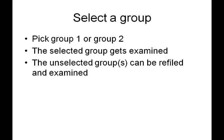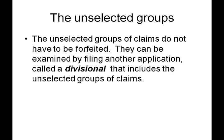However, we don't need to forfeit or abandon those unselected claims. They can be examined by filing another application called a divisional application, that includes the unselected groups of claims. Note that there is typically some cost associated with this, as there are additional filing fees to the US Patent Office. If using a patent professional, there may be some preparation costs to file the divisional application. But filing a divisional is typically less than the cost of a full application, because a divisional application is basically a copy of your original application but including only one of the unelected groups of claims.